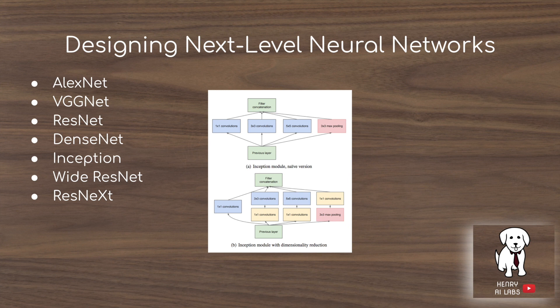The idea of designing next-level neural networks has come a long way from AlexNet to VGNet, ResNet, DenseNet, Inception, WyzResNet, and then the ResNext, which is currently the state-of-the-art on ImageNet with a little modification from Facebook to adjusting the input resolution.